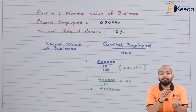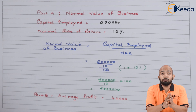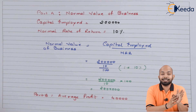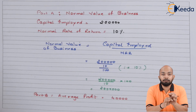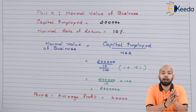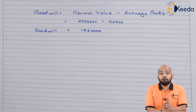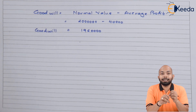Part A is now figured out. Part B — the average profit — is already given as ₹40,000. Goodwill = Normal value of business − Average profit = ₹20 lakhs − ₹40,000 = ₹19,60,000. This is the goodwill of the firm under the capitalization method. Since the question asks for three years purchase, this value is used directly as the final goodwill figure.